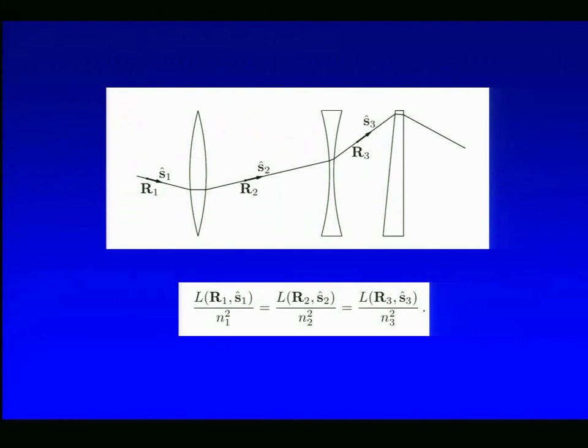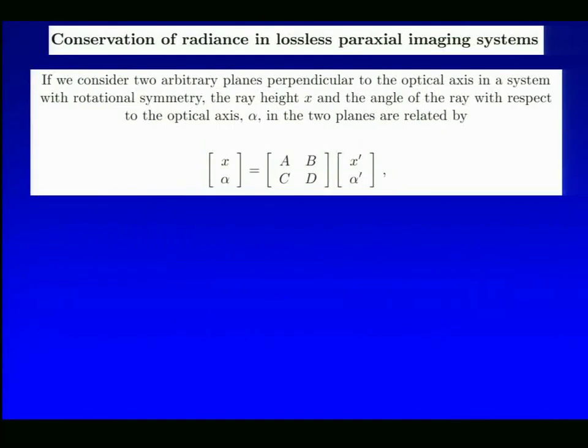But it's more general than that. It works also for lossless optical systems of any kind. If there are no reflection losses or absorption losses, I can trace rays through any system and define multiple points. Because it's the same ray, I can relate S1 to S2 to S3. They're not the same vector any longer. But the equation is that L of R1 and S1 hat divided by the square of the refractive index is the same as the other two points given. So if the observation points are all in the same medium, then once again you say that radiance is constant along a ray.